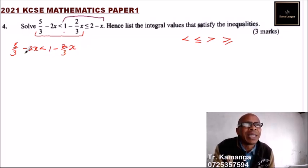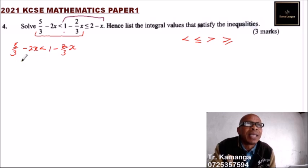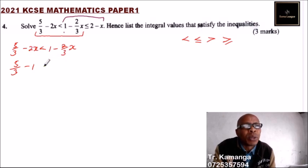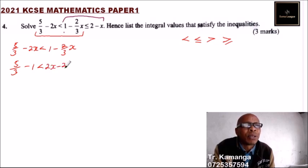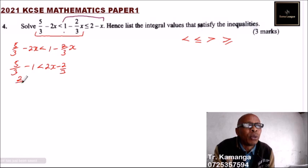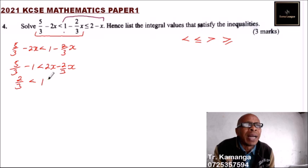We take x to the other side. So we have 5 divided by 3. When 1 crosses the inequality side it becomes negative, so that is minus 1. When 2 over 3x crosses, it becomes positive. So we have: 5 over 3 minus 1, which is 2 over 3, less than 2x minus 2 over 3x, which gives 1 and a third x, or written as 4 over 3x.